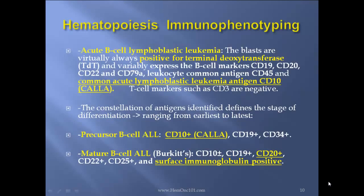Acute B cell lymphoblastic leukemia — the blasts are virtually always positive for TdT, and variably express B cell markers CD19, CD20, CD22, and CD79. And leukocyte common antigen CD45, and very importantly, the common acute lymphoblastic leukemia antigen CD10 — CALLA. T cell markers such as CD3 will be negative. The precursor B cell ALL will be CD10 positive, CD19 positive, CD34 positive. The mature B cell ALL will be CD10 plus or minus, CD19 positive, CD20 positive, CD22 positive, CD25 positive, and surface immunoglobulin positive.